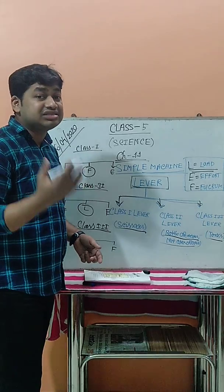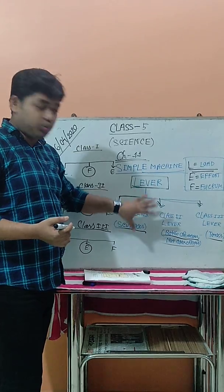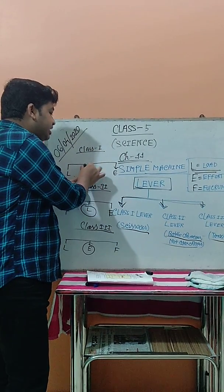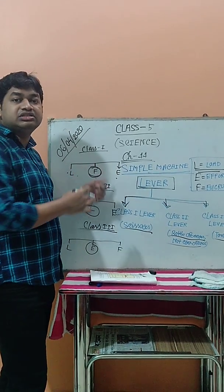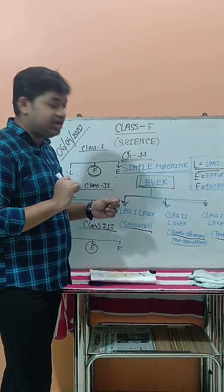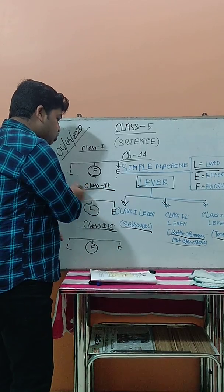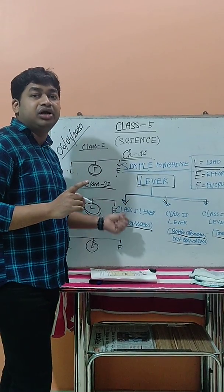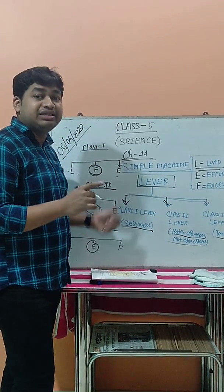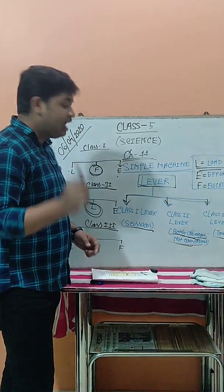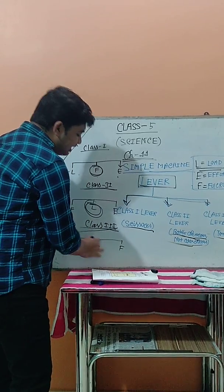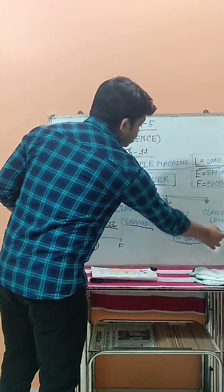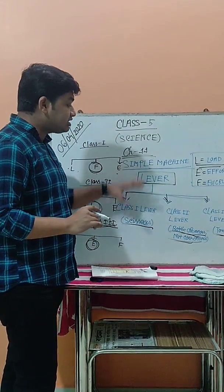To recap: levers are three types. Class 1 lever — fulcrum is located between the load and effort; example is scissors. Class 2 lever — load is located between the fulcrum and effort; examples are nutcrackers and bottle opener. Class 3 lever — effort is located between the load and fulcrum; examples are tongs and fishing rods.